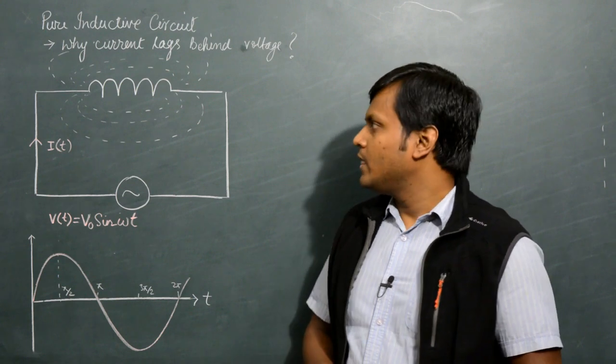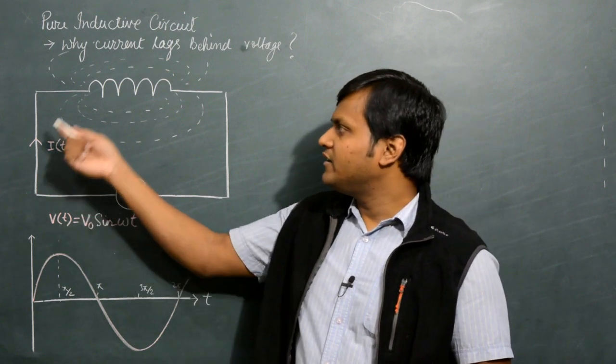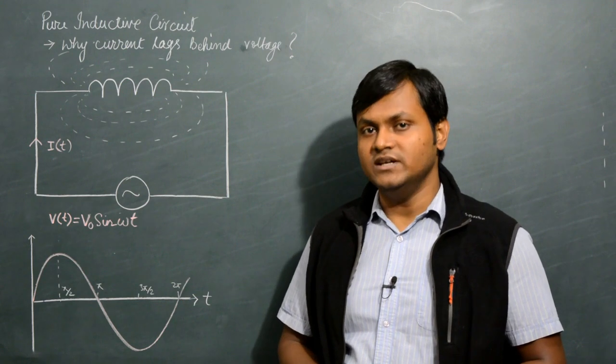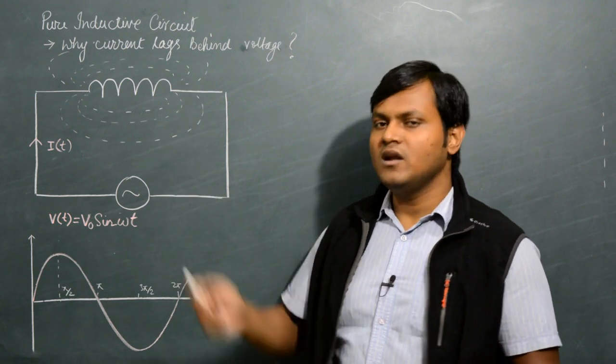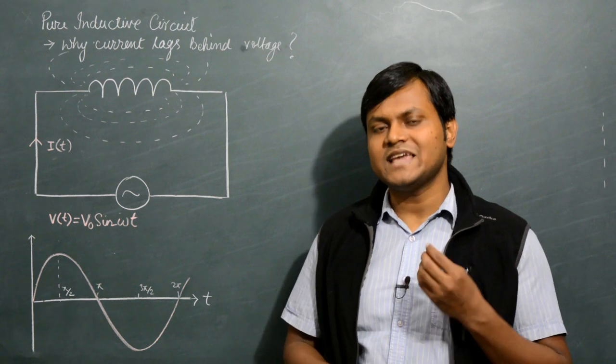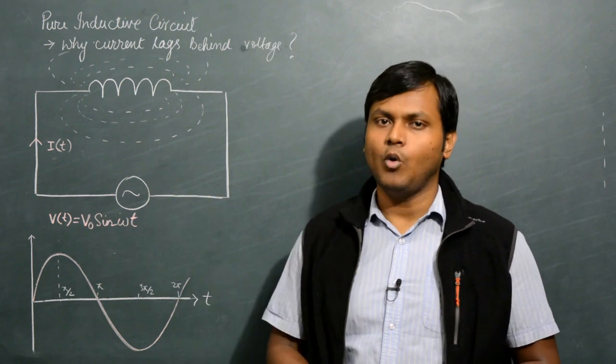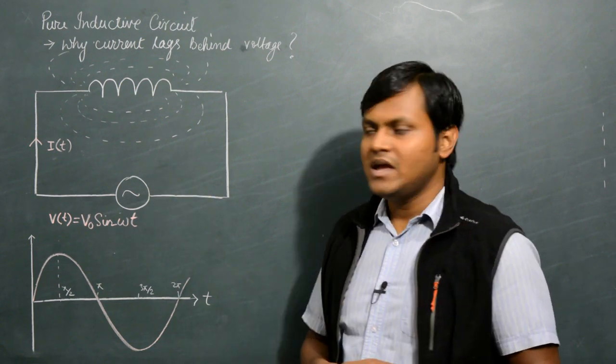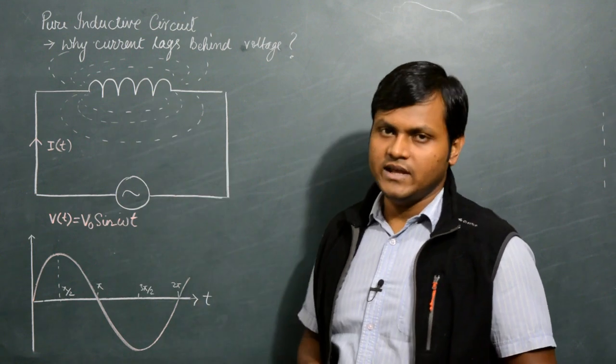This means that every time the current is either trying to increase or decrease, this magnetic flux opposes the change in the current by generating a secondary EMF through this particular coil. This induced EMF in the inductor is given by...